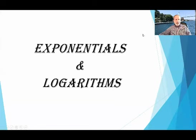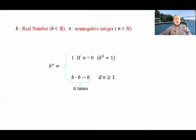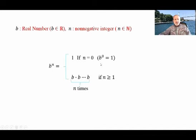Hello and welcome to exponentials and logarithms. If b is a real number and n is a non-negative integer, we define b to the power n as equal to 1 if n is 0, so b to the power 0 is 1. And it's the multiplication of b by itself n times if n is greater than or equal to 1.